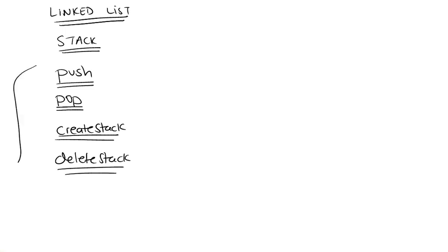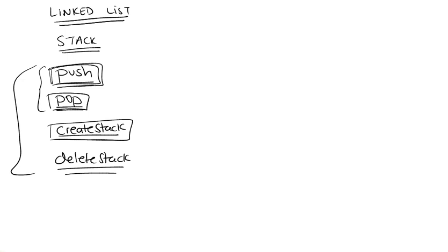What the user will have to do, effectively, is first create a stack by calling the create function, then push elements into the stack, pop elements, push again — do whatever you want with those two operations. And then in the end, once you're done with your stack, you deallocate the memory that you've used. So these are the four functions that we're going to be writing in code.